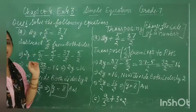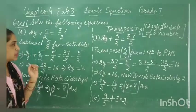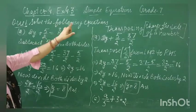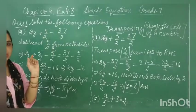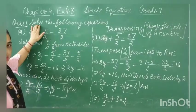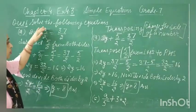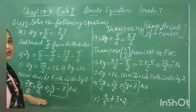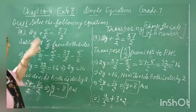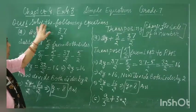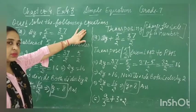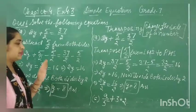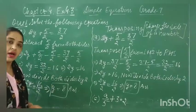The next exercise is exercise 4.3. In this exercise we have to solve the following equations. It is not written that you must write down the steps, but the method you must follow. Solving the equation means finding the value of the variable in the simplest way.